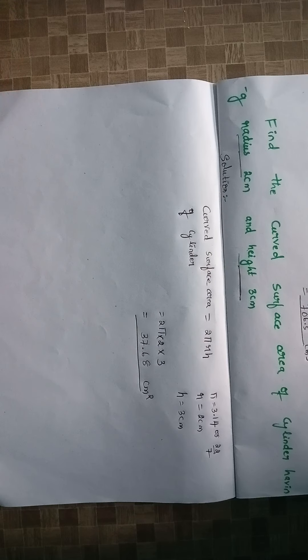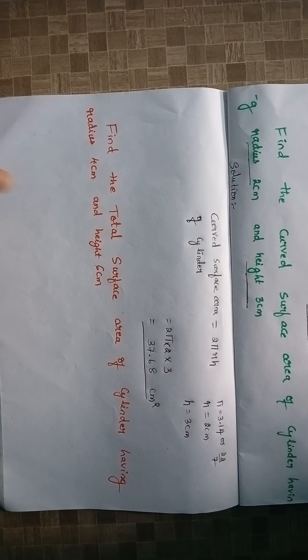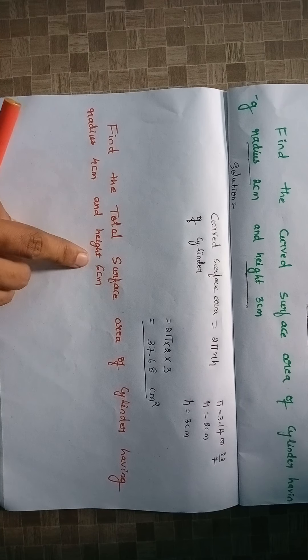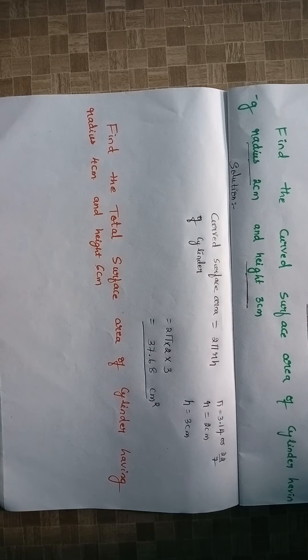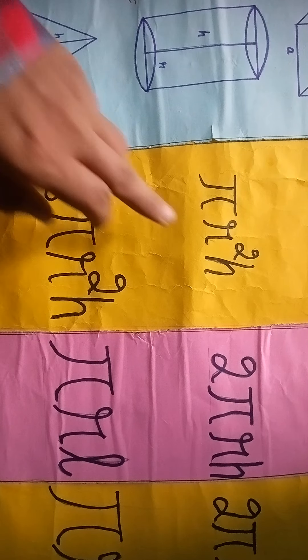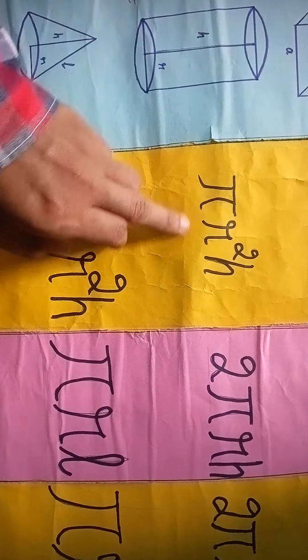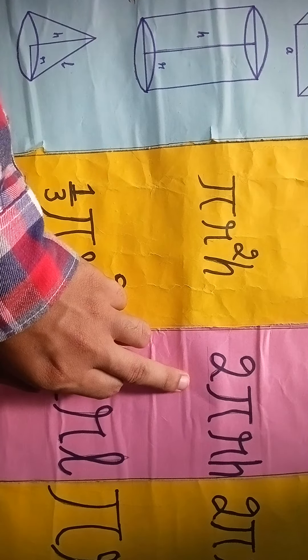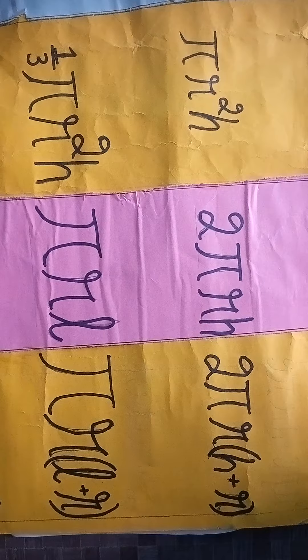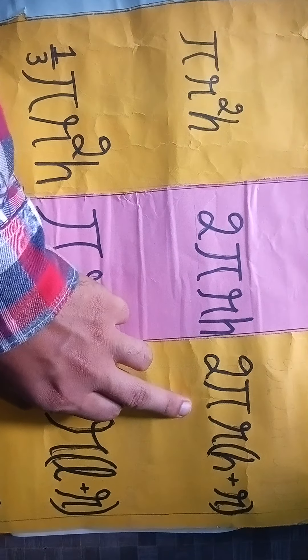The new problem is: find the total surface area of a cylinder having radius 4 centimeters and height 6 centimeters. From the chart: volume of cylinder is πr²h, curved surface area is 2πrh, and total surface area of cylinder is 2πr(h + r).